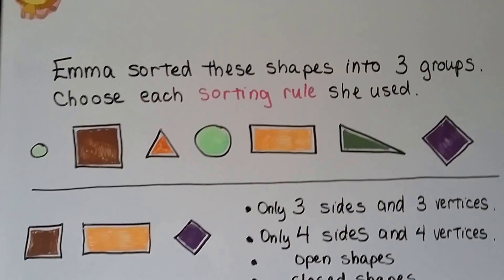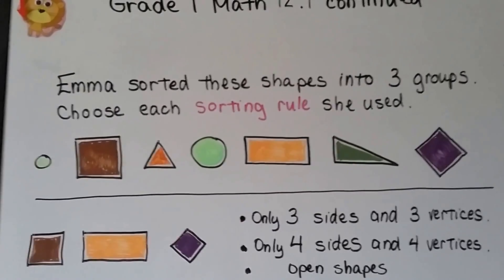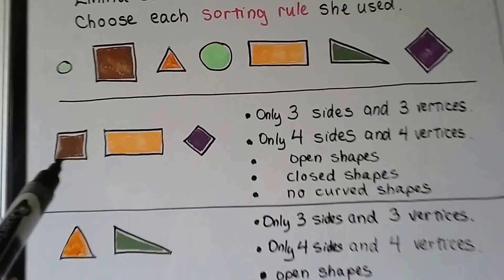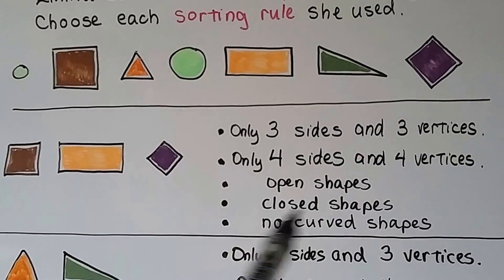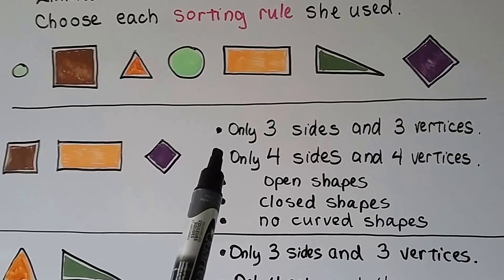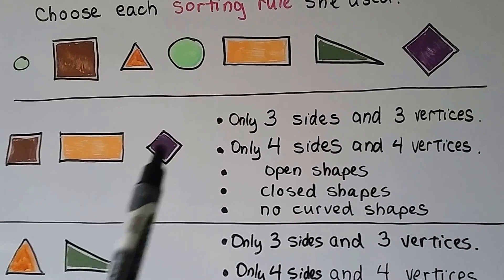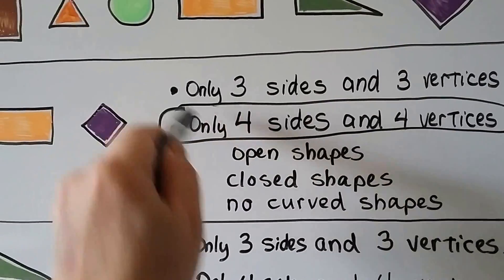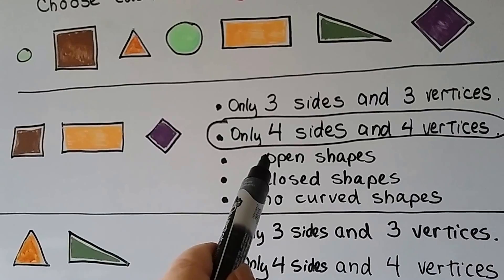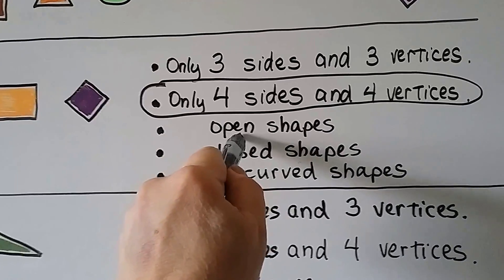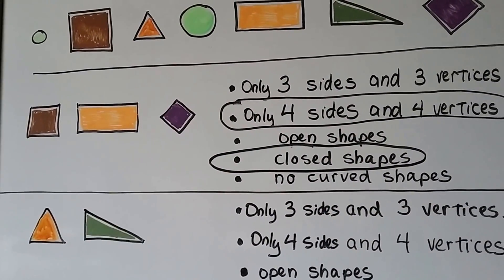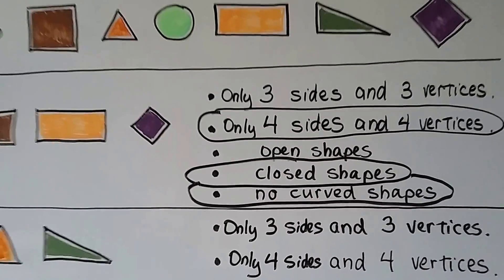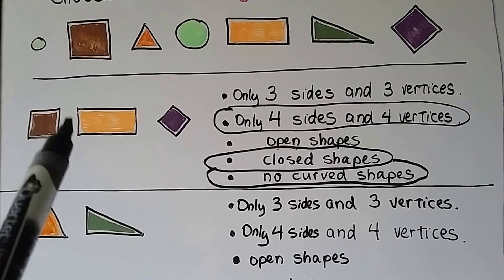Emma sorted these shapes into three groups. In her first group, she has shapes with four sides and four vertices. Did she use the rule that they only have three sides and three vertices? No — these have four sides. So she used the rule: four sides and four vertices. They all look closed, and there are no curved shapes.